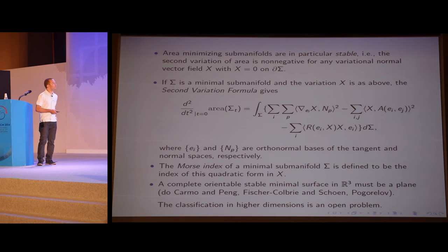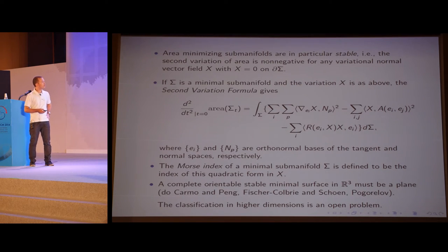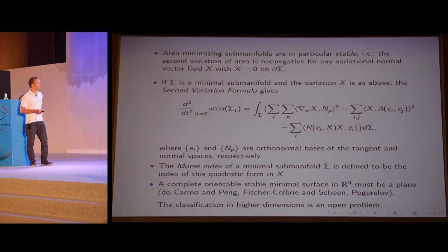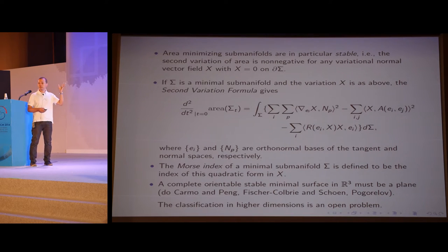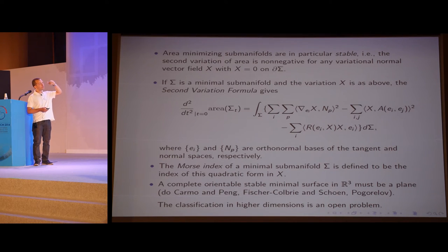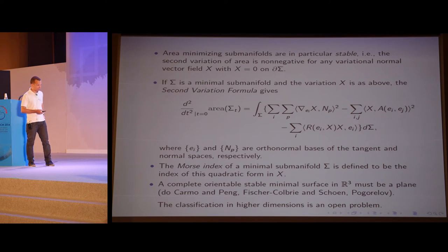It's a beautiful extension of the Bernstein theorem that any complete orientable stable minimal surface in R3 must be a plane. This was proven independently by do Carmo-Peng, Fischer-Colbrie and Schoen, and Pogorelov. It turns out that the classification of stable minimal hypersurfaces in higher dimensions is an open problem — we don't even know whether there are non-trivial examples in R4.